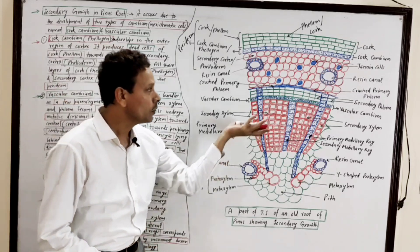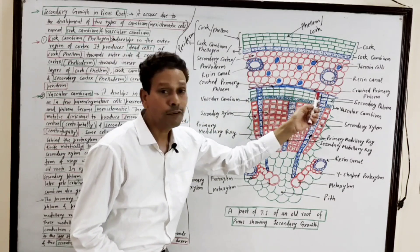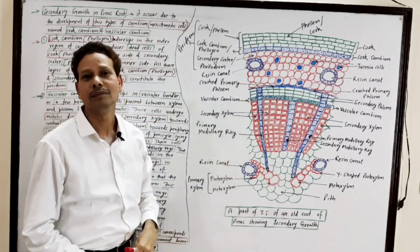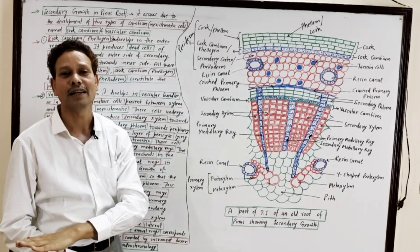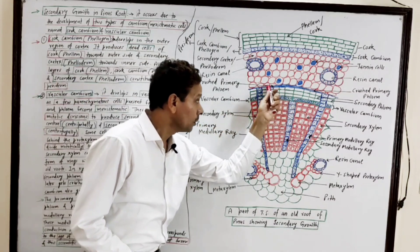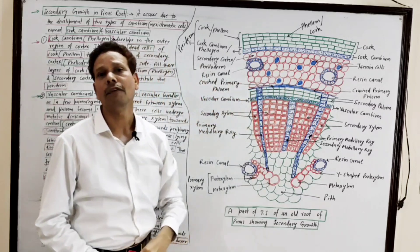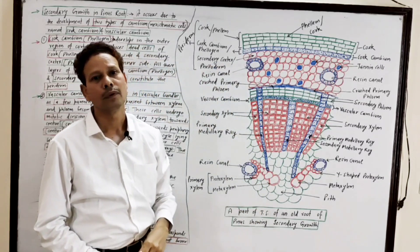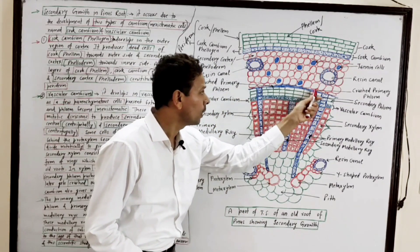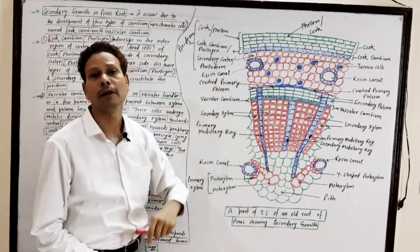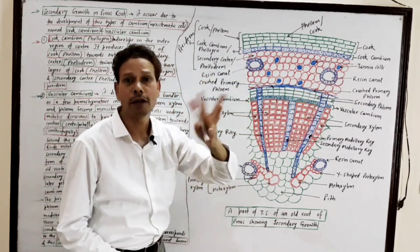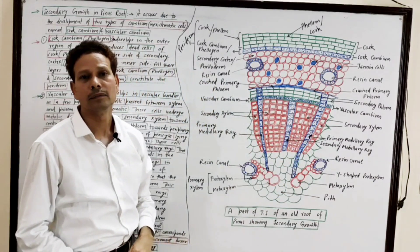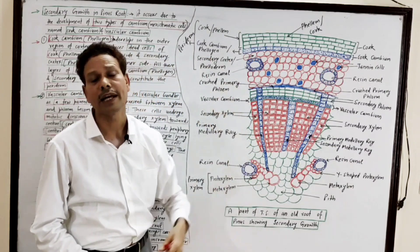The vascular cambium cells undergo mitotic divisions to give rise to secondary phloem towards the periphery in the outer region, while secondary xylem forms towards the inner side. Due to the development of this secondary phloem, the primary phloem becomes crushed — it is a very thin, poor layer — because the secondary phloem develops in excess.